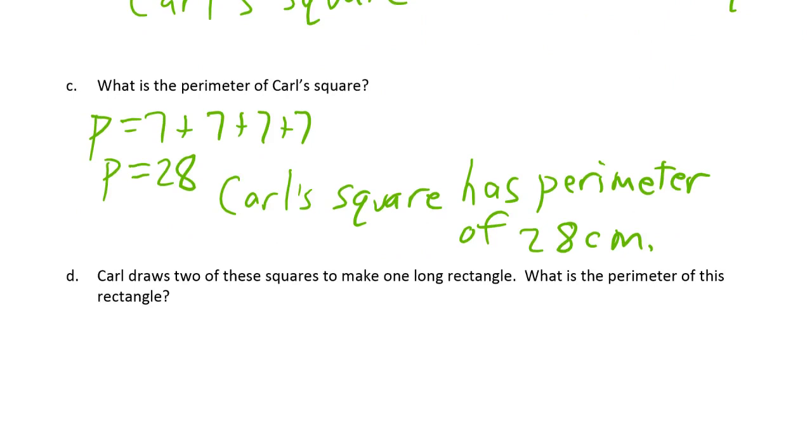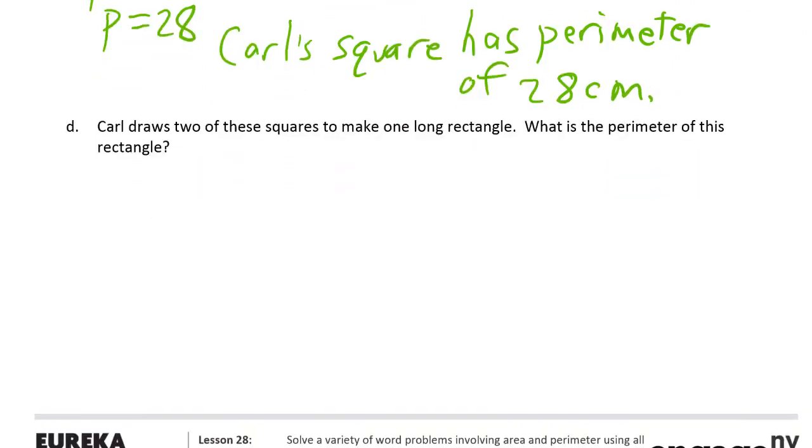Carl draws two of these squares to make one long rectangle. What's the perimeter of this rectangle? So now I'm going to have to draw two of those squares together. I'm going to label this one is 7, 7, 7 and this is 7, 7, 7. Now since we're talking about the perimeter we don't need to worry about this side right here. This is inside, we only count the outside for perimeter. So how many sevens is that? I always start at this corner here: one, two, three, four, five, six. So that's six sevens.